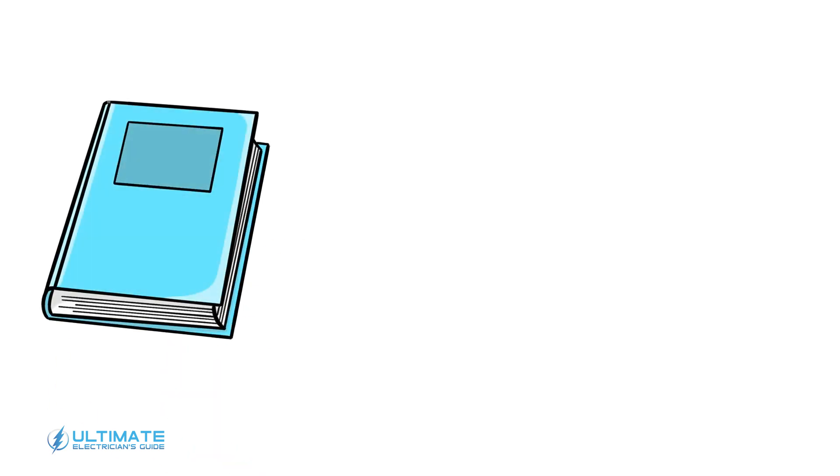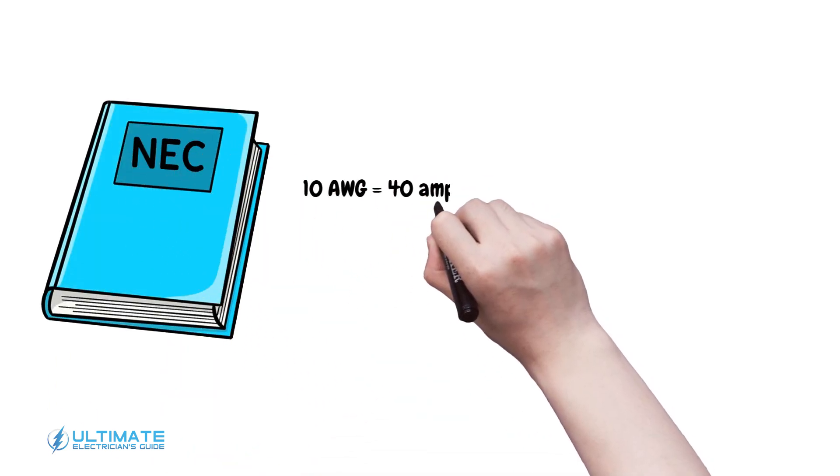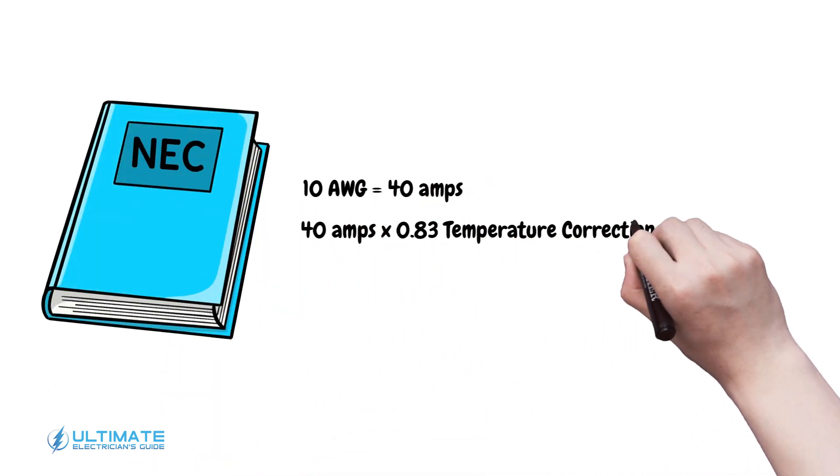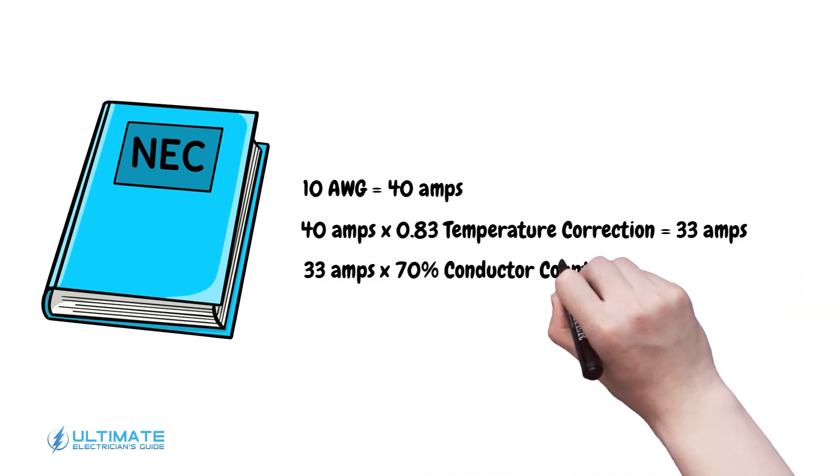Because of these conditions, the NEC requires you to derate or reduce the ampacity of conductors to protect them. In the following lessons, you will learn how to identify the base ampacities of conductors and how to apply adjustment and correction factors for these conditions.